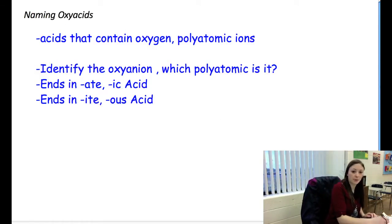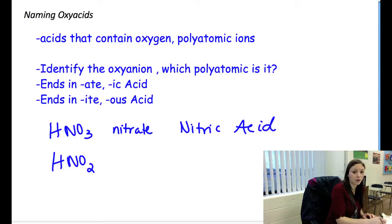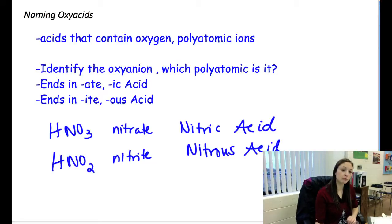So if you have, for example, HNO3 and HNO2. NO3 is nitrate. So it gets changed from nitrate to nitric. We go nitric acid. Notice how there's no hydro here. Hydro is just for binary acids. Well, NO2 is nitrite. So this gets changed to nitrous acid. Again, notice how there's no hydro. Hydros are only for binary acids.